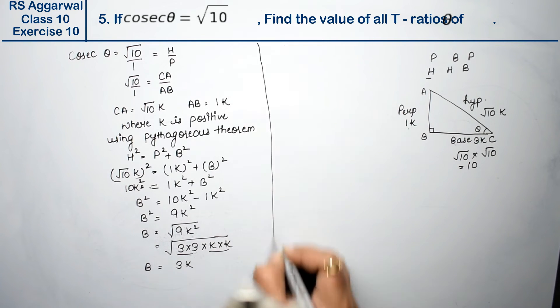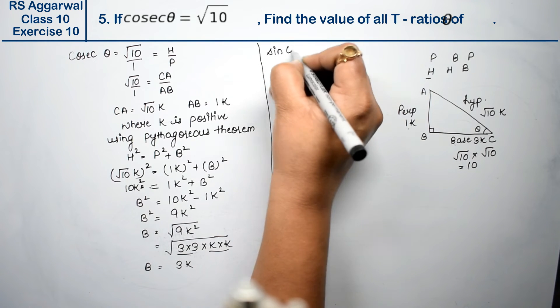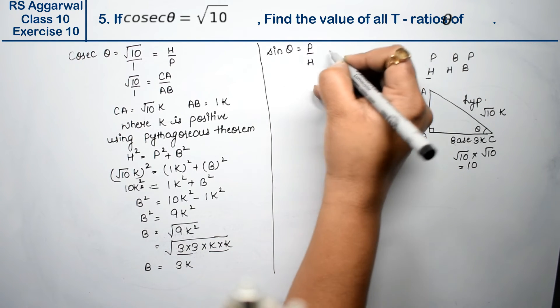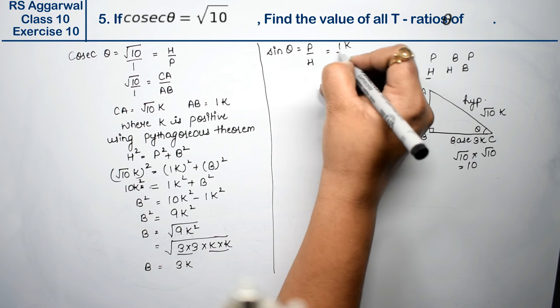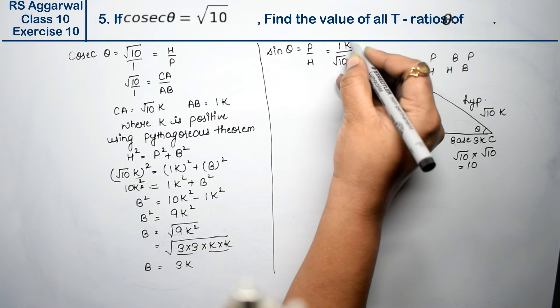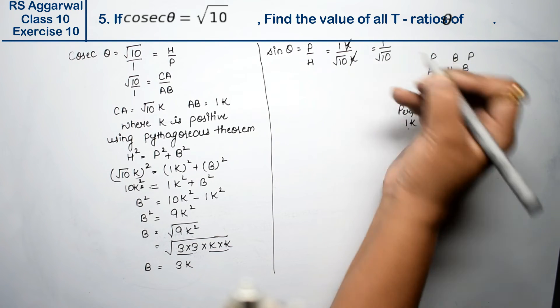Now we have to find sin theta, cos theta, all of them. Sin theta's formula is P upon H. P is 1k and H is root 10k. K and k cancel. So this becomes 1 upon root 10.